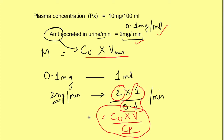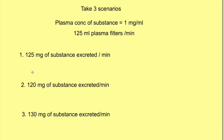Freely filtered means that whatever concentration is present in plasma, the same concentration of the substance should be in the tubular filtrate. Now, to understand which substance is used for glomerular filtration rate and which for renal plasma flow, let's take three scenarios. The plasma concentration of a substance is 1 mg per ml, and we suppose that 125 ml of plasma is getting filtered in the tubules per minute.